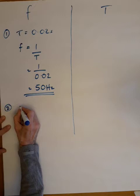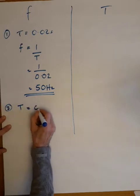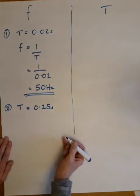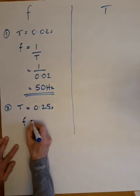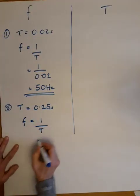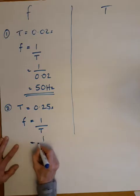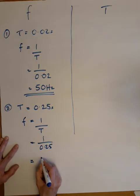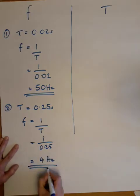In example 2, the periodic time is 0.25 seconds. Frequency is 1 over T. That is 1 over 0.25, which is 4 hertz.